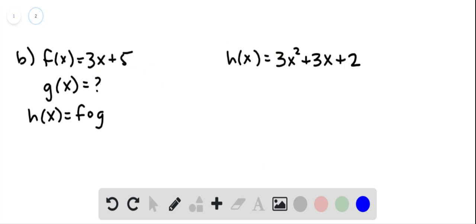For part b, we have a similar situation where we have a function h of x, and now we know the outside function f, but we don't know the inside function g. That's what we have to figure out. So what we want to do is work on h and get it to look more like this: 3 times something plus 5.